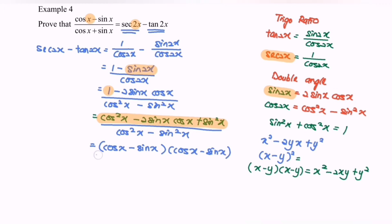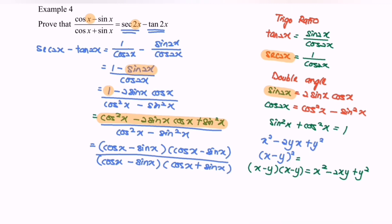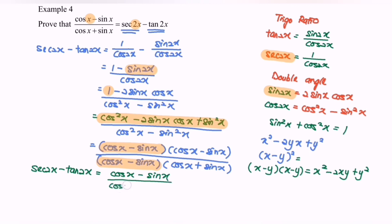For the denominator, cos²x - sin²x factors as (cos x - sin x)(cos x + sin x). So we have (cos x - sin x)² over (cos x - sin x)(cos x + sin x). Cancelling the common factor (cos x - sin x), we get (cos x - sin x) / (cos x + sin x). Therefore, sec 2x - tan 2x = (cos x - sin x) / (cos x + sin x). Proven.